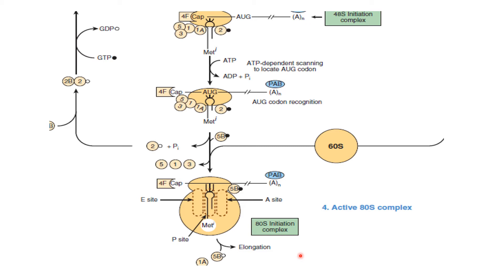The initiator tRNA first goes to the P-site in both prokaryotes and eukaryotes. The P-site subsequently holds the tRNA containing the peptide chain, but at the initial phase, at the start of elongation, this tRNA first binds at the P-site.